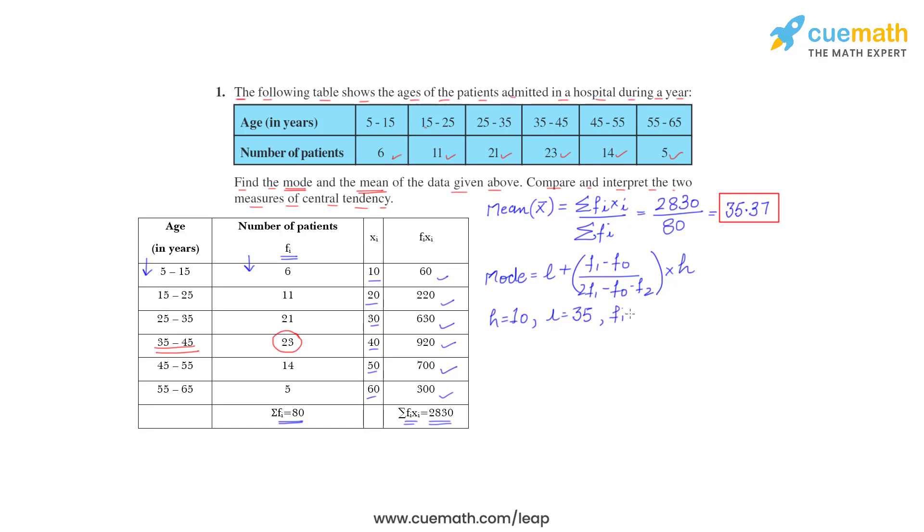Then F1, frequency of modal class, that is 23. Then F0, that is the frequency of class preceding the modal class. Preceding the modal class means one above, one previous. So that is 21. Frequency of that class is 21. Then F2, frequency of class succeeding the modal class. Succeeding means one after, next one. So it is 14.